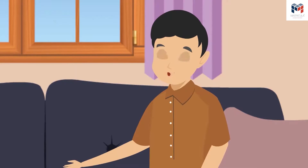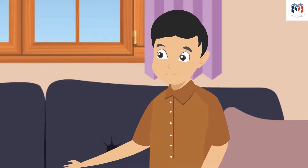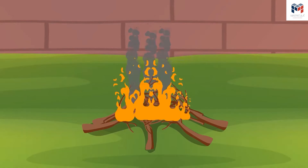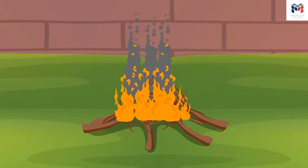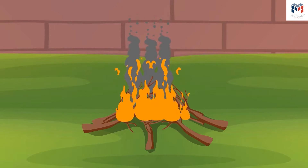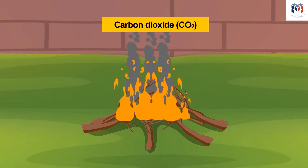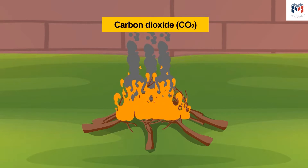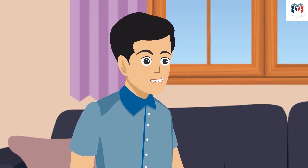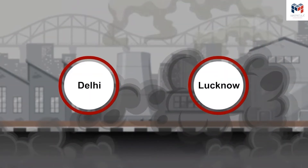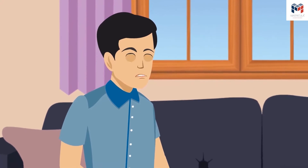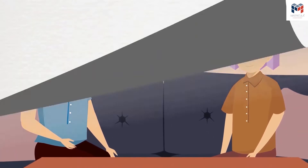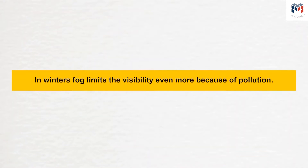What an interesting experiment! Have you seen that whenever we burn wood, it gives black fumes? That fume is a mixture of many gases of which CO2 is the main component. I heard in TV news that the pollution level of cities like Delhi and Lucknow often rises, in which CO2 is the main component, due to which people struggle to breathe and can only see up to short distances. In winters, fog limits the visibility even more because of this.